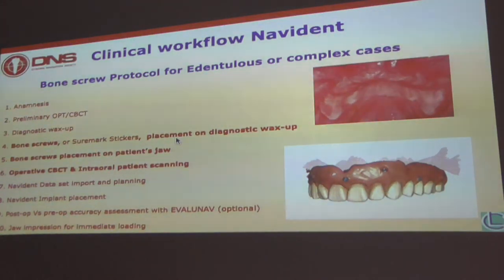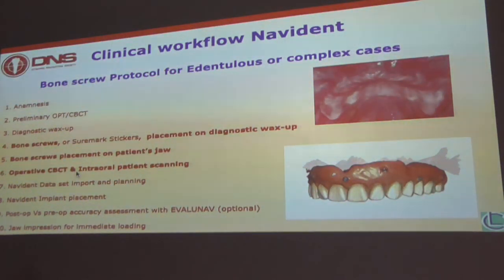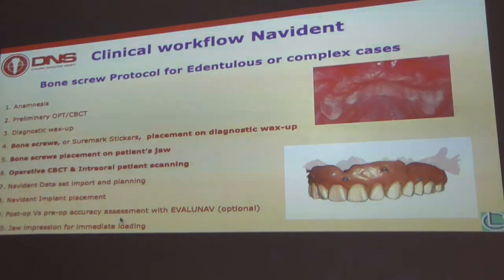You can also use other radiographically recognizable devices. Number six: operative CBCT. I call it operative CBCT because with this CBCT and the bone screws together, I can plan the case — importing the data on Navident and planning. Then implant placement, and post-op versus pre-op accuracy assessment. That's an assessment I use — it's optional but I use it just to check what I'm doing.